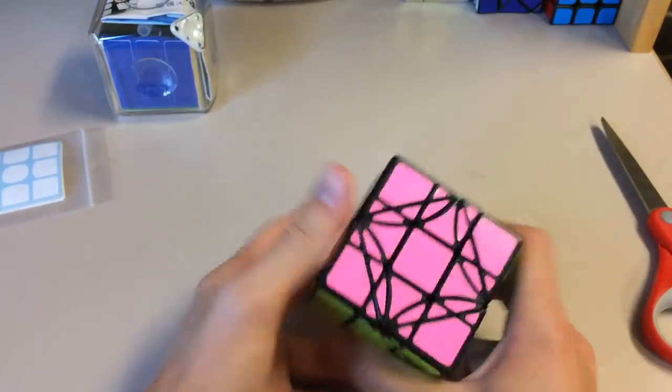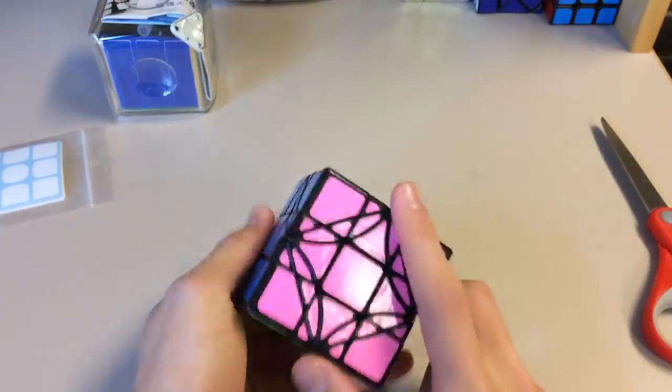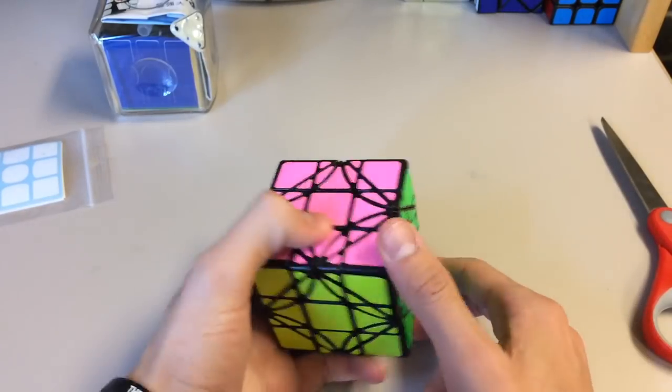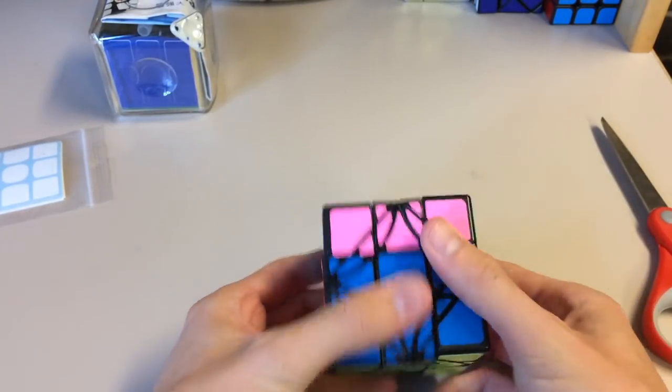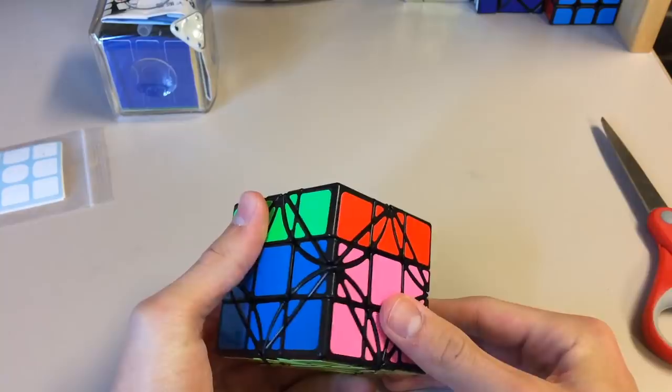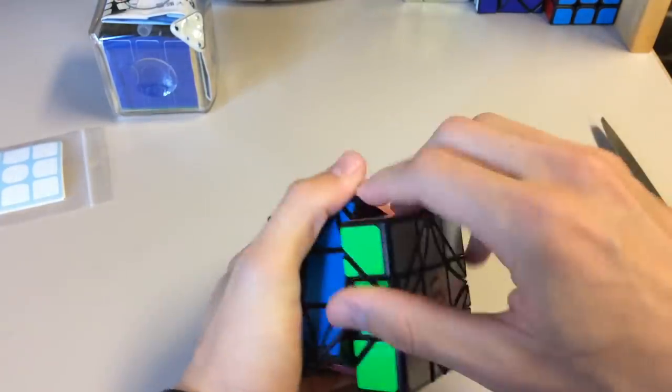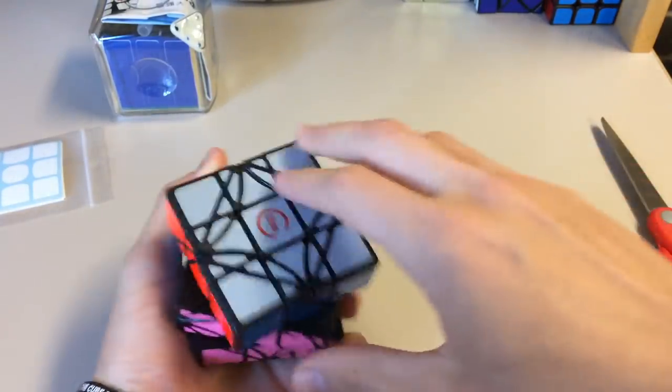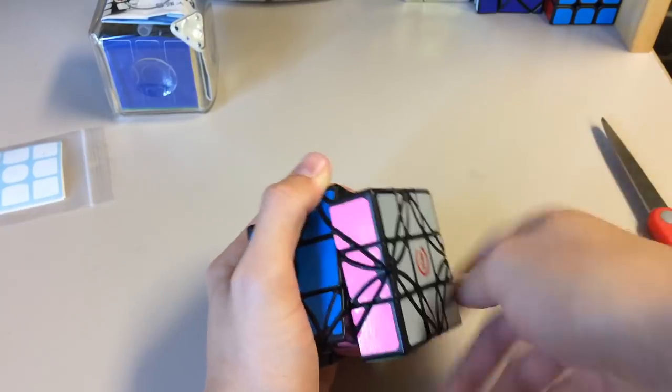It can look pretty crazy. I'll scramble it at the end of this video. But the color scheme is a little weird. You got red, gray, blue, pink, green, yellow. So that looks pretty cool. First turns, again, pretty smooth, not catching on anything even though there's a lot of pieces.